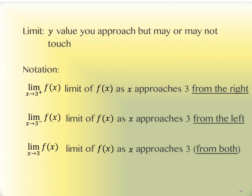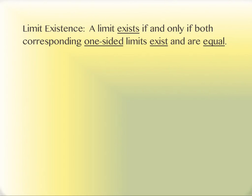The second notation has a little negative after the 3, which means you're approaching from the left — the negative side of the graph. And then if there's not a plus or a minus after it, like the last notation, it means you have to approach from both sides. You have to move in from both directions towards that same x value and see what the y value is doing. A limit will exist if and only if both the limit from the left-hand side and the limit from the right-hand side get close to the same y value — they both have to exist and be the same.